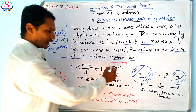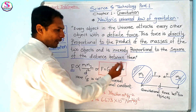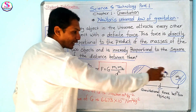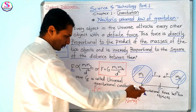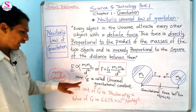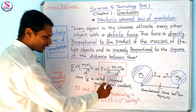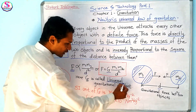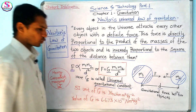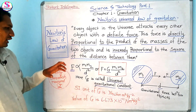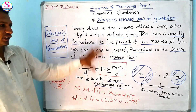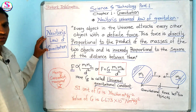Mathematically, we can say: Force = G × m1 × m2 / d². Here m1 and m2 are the masses of the two objects, d² is the square of the distance between them, and G is called the universal gravitational constant — a constant that holds mathematically and theoretically in this law of gravitation as stated by Newton.